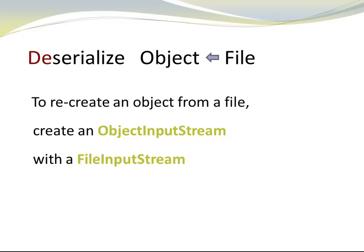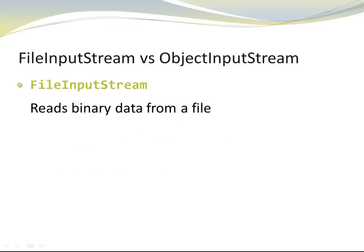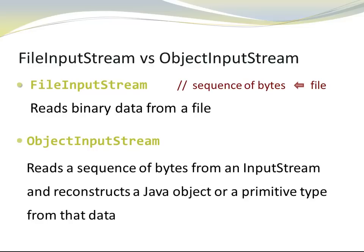To recreate an object from a file, we create an ObjectInputStream with a FileInputStream passed as an argument. A FileInputStream reads binary data from a file — it knows how to open a file, read data, and turn it into a stream of bytes. An ObjectInputStream reads a sequence of bytes from an input stream and reconstructs a Java object or a primitive type based on that data. In other words, the ObjectInputStream takes a sequence of bytes and transforms it to an object.